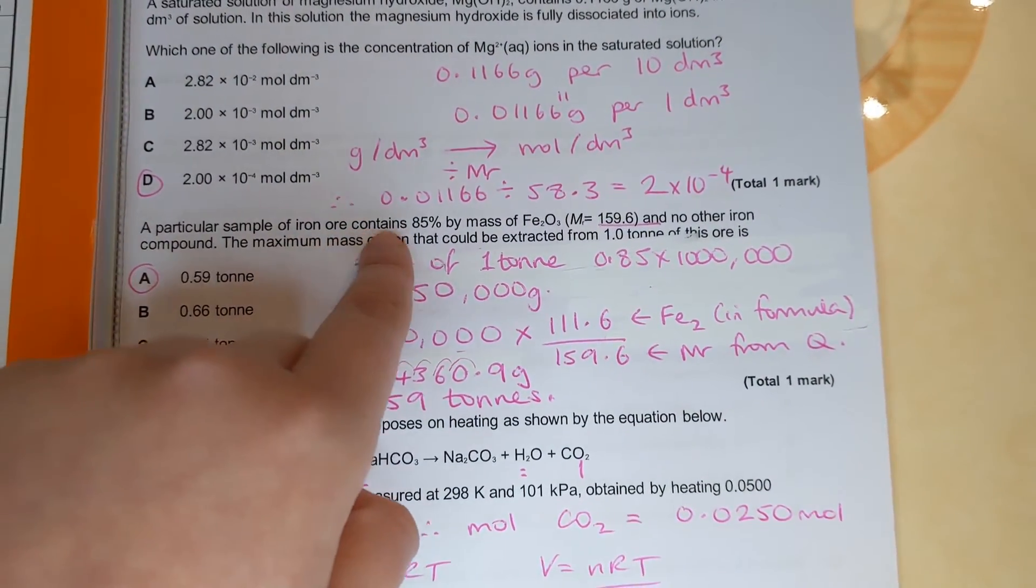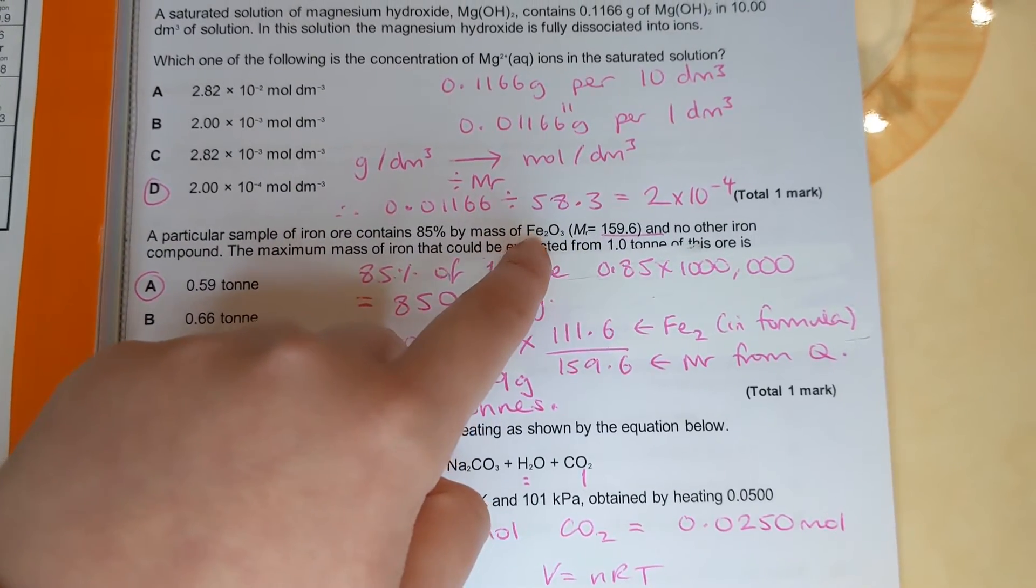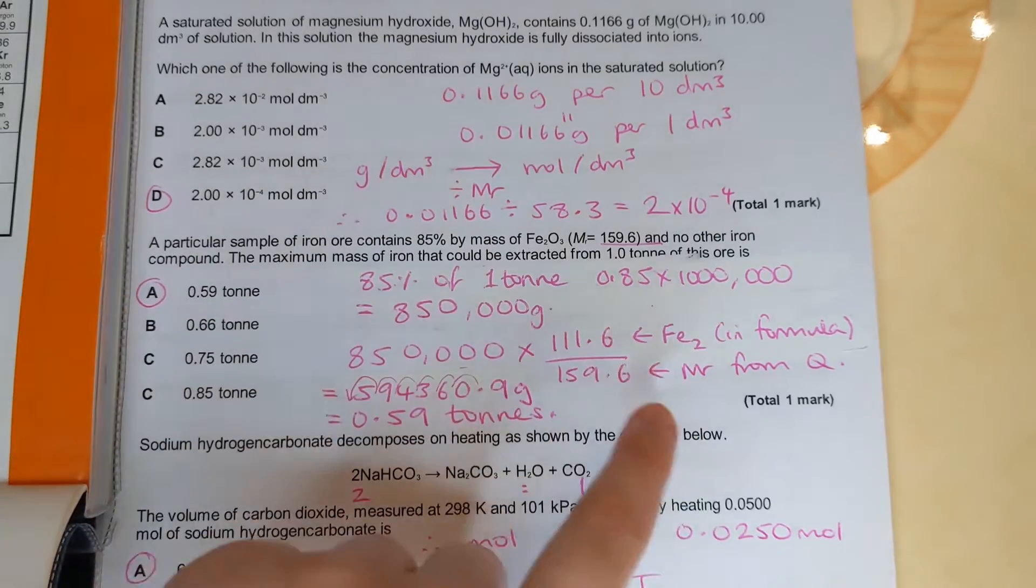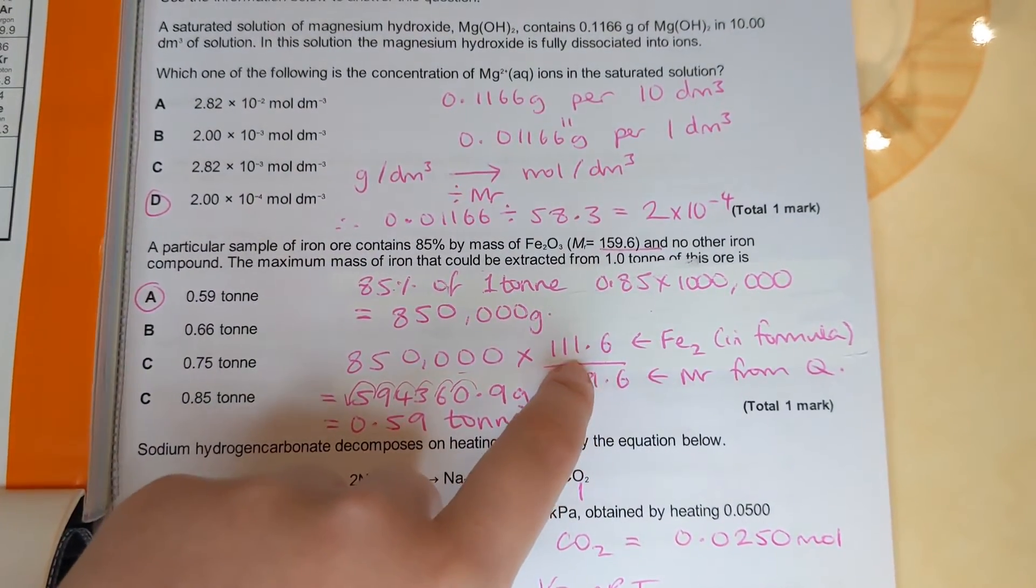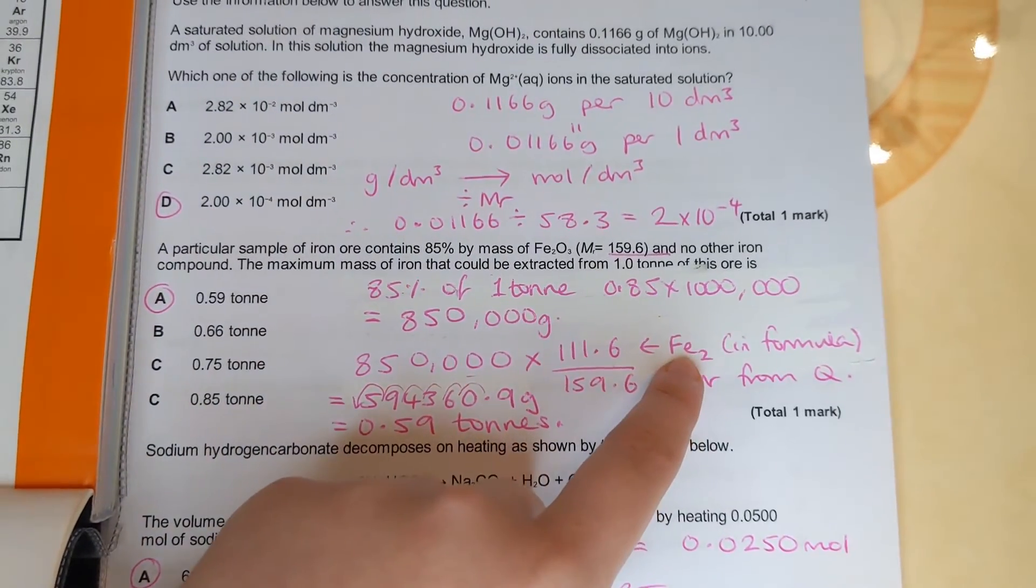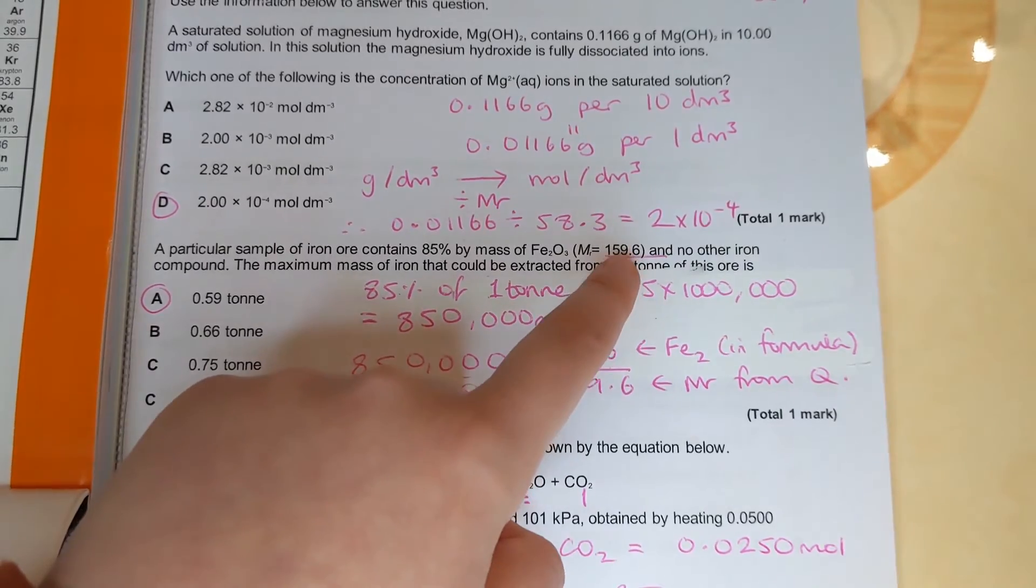...is talking about a maximum mass of iron from this compound and we've got two lots of iron in this formula unit, fe2. So I looked for iron on the periodic table, times the big number by two because of the fe2 in the formula and divided that by the mr from the question.